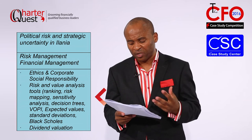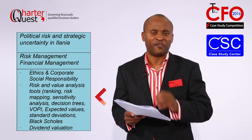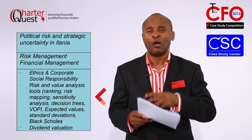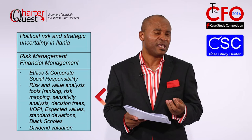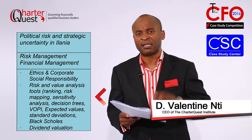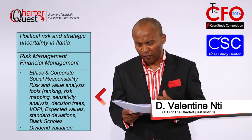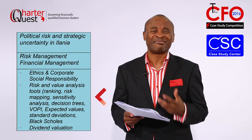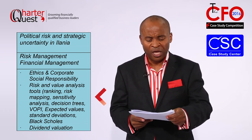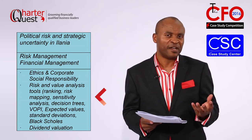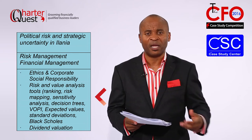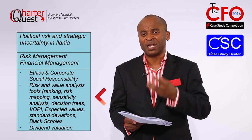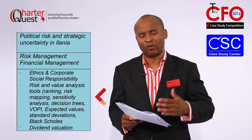The issue is fundamentally about risk and risk management. Tools of risk and value analysis that will be vital include ranking, risk mapping, sensitivity analysis, and using decision trees to quantify and evaluate complex options before the board. You are also given scope to go beyond what has been presented. Key concepts include value of perfect information, expected values, standard deviations, and the Black-Scholes model for quantifying uncertainty embedded in options. Dividend valuation techniques will also be helpful in understanding the impact on the business's options going forward.